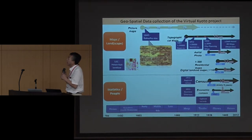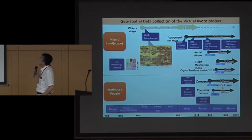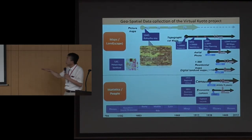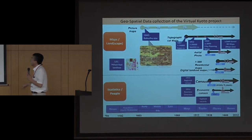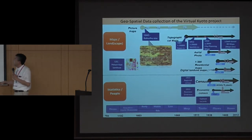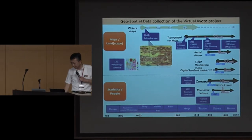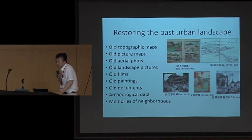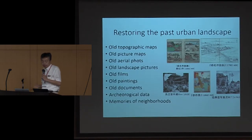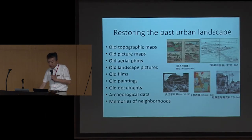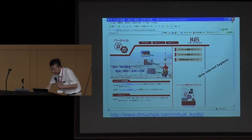This is a table of the Kyoto area data. First, we gather geospatial data for the project, including maps, aerial photos, old maps, and pictorial maps, as well as statistical data. Sometimes we also use archaeological data in the Kyoto area. For restoring the past urban landscape, we used paintings, old paintings, old photos, and old movies. The digitization of that old data is almost finished.